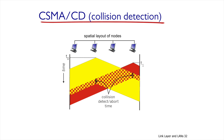CSMA/CD is a variation of CSMA. In CSMA, before the transmission, the node makes sure the channel is idle. In addition, in CSMA/CD, during the transmission the node tries to listen as well. If it can detect a collision, it aborts transmission immediately. This reduces time wasted on the link.